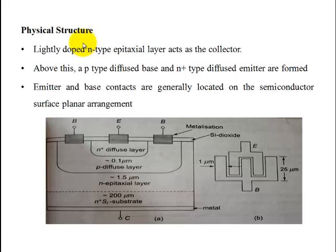The physical structure differs from normal transistors. The structure consists of an N-type silicon substrate with an N-type epitaxial layer as the collector. Above that is a P-type diffused layer which acts as the base, and next is a heavily doped N-type diffused layer which acts as the emitter.